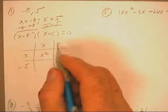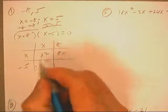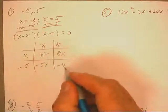x times x, x squared. x times 8, 8x. Negative 5 times x, negative 5x. Negative 5 times 8, negative 40.